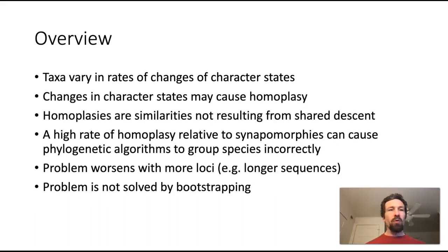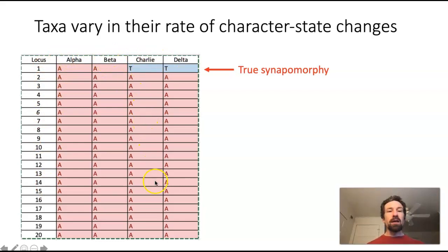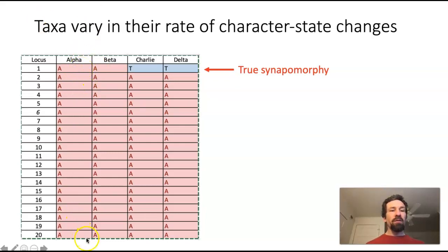Now let's cover it in depth, point by point. First, consider that taxa can vary in their rate of character state changes. To show this, I have four taxa named alpha, beta, charlie, and delta. This is our character-by-taxon matrix, with characters in different rows and our four taxa each in their own column. Just to make the example easy, at some point well in the past all taxa have character state A — so A, G, C, and T — one of our four base pairs for all of the loci. This will make it easier to see where changes arise.